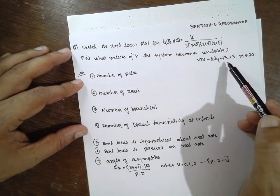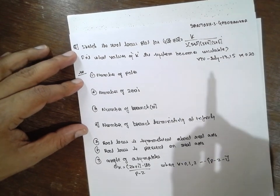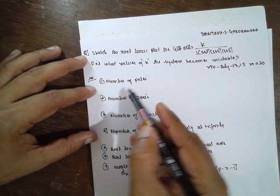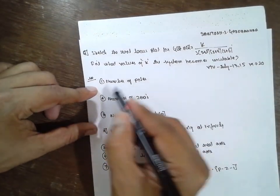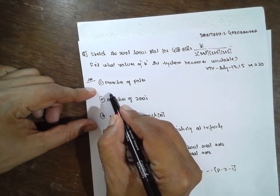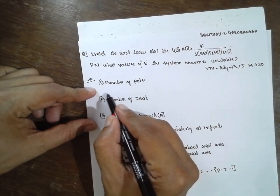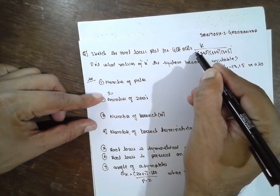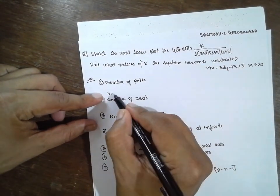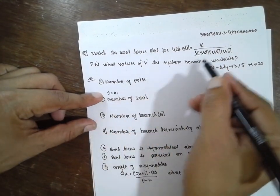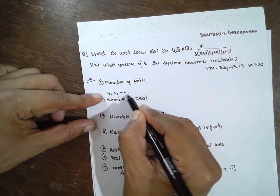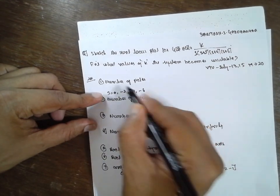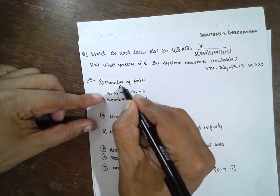This problem is given in video 13-14 for 20 marks. Number of poles: for s the pole is at 0, then minus 2, minus 4, and minus 6. Therefore, the number of poles is 4.